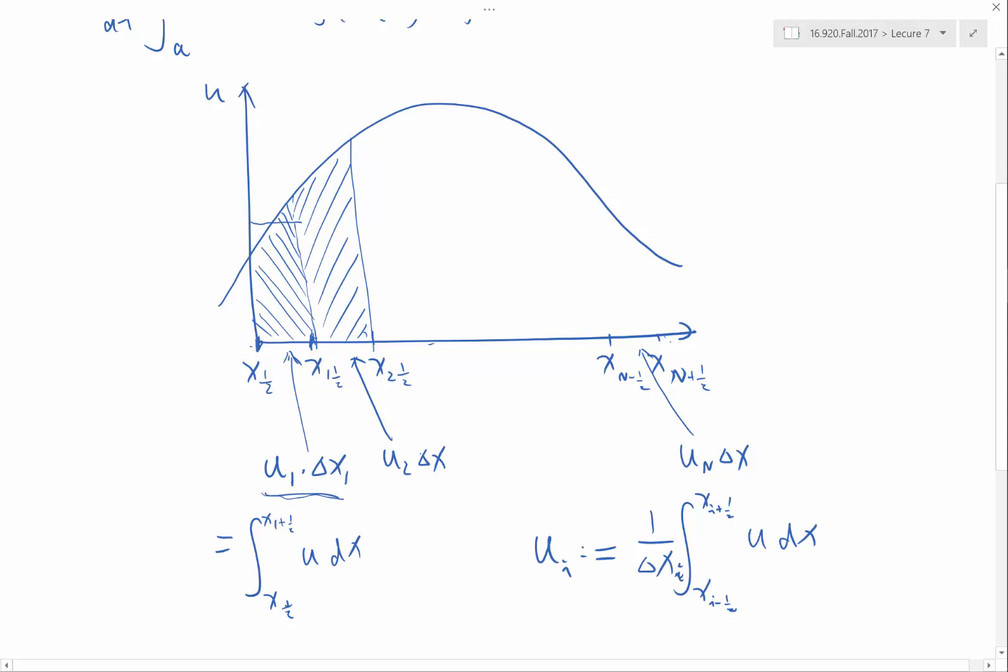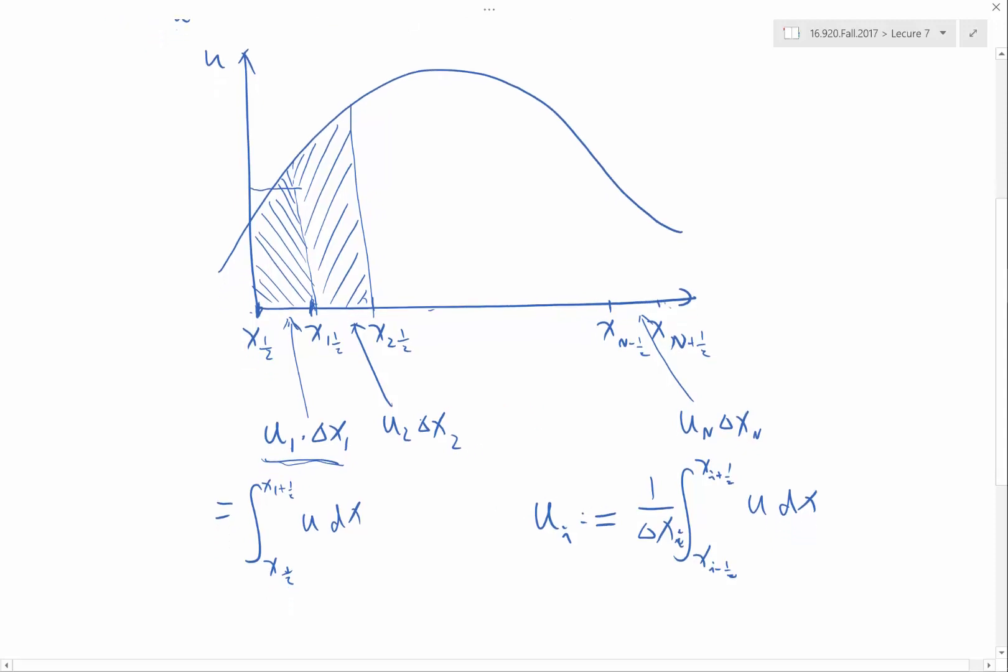You're going to see that there is no difficulty in varying the size of these points. So this is delta x1, this is delta x2, this is delta xn. Here's the definition of what I store in the computer: the volume averages.